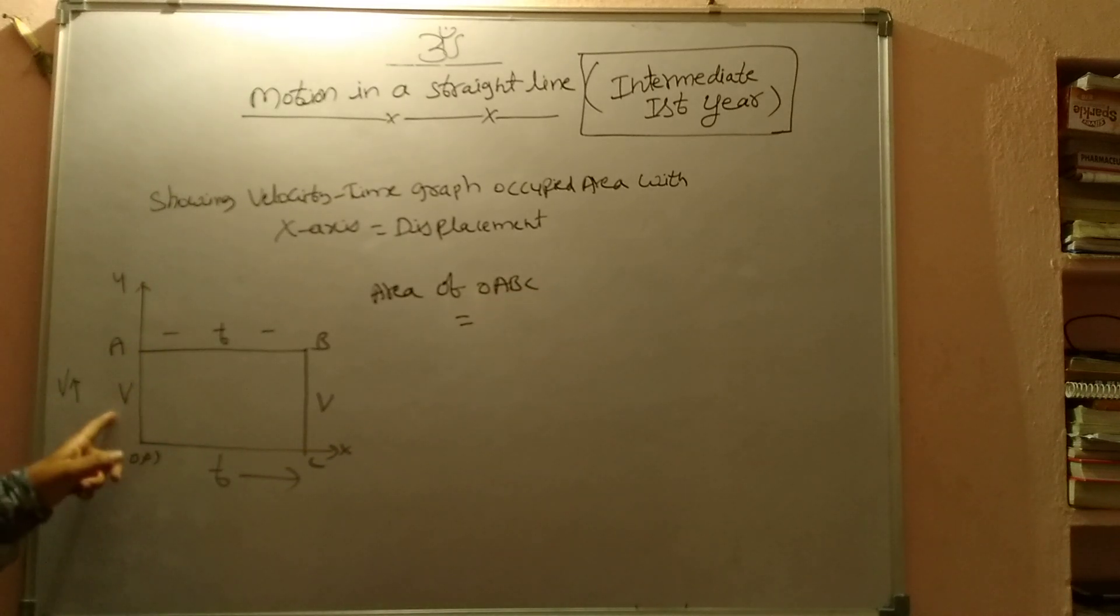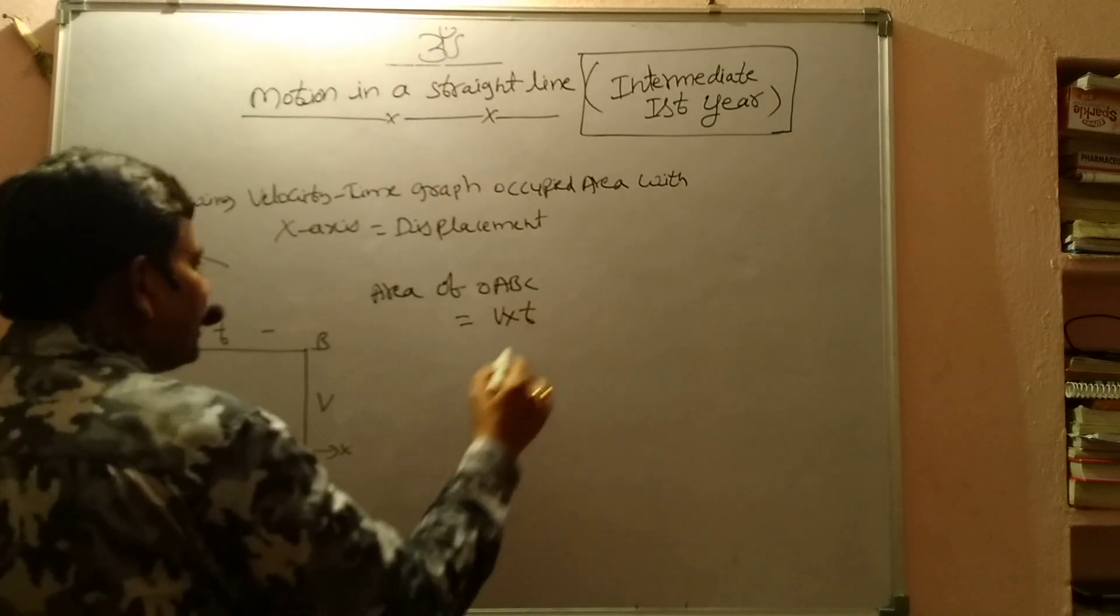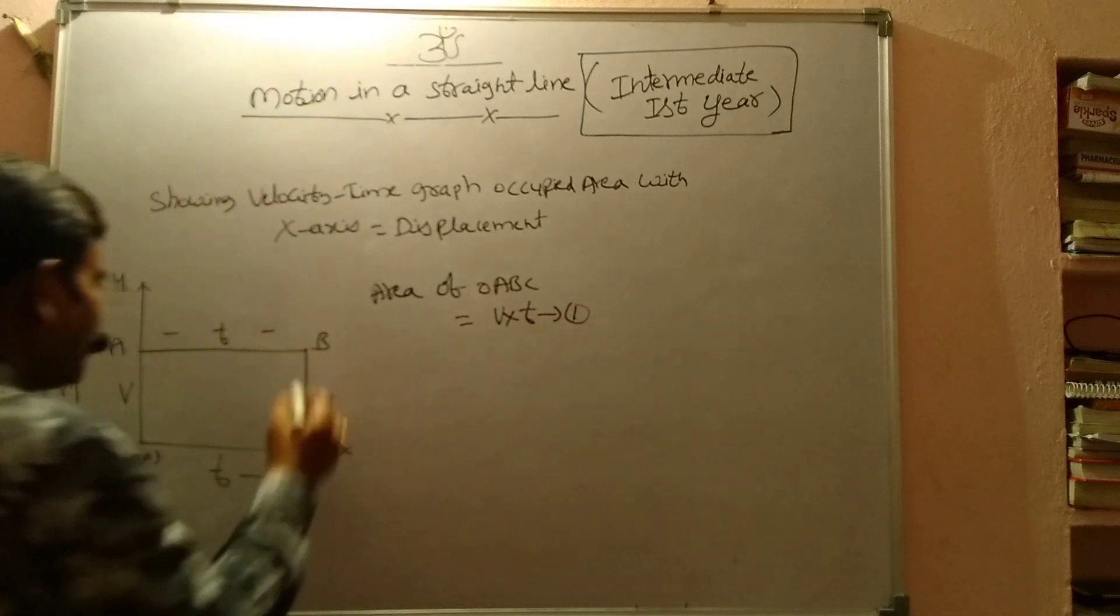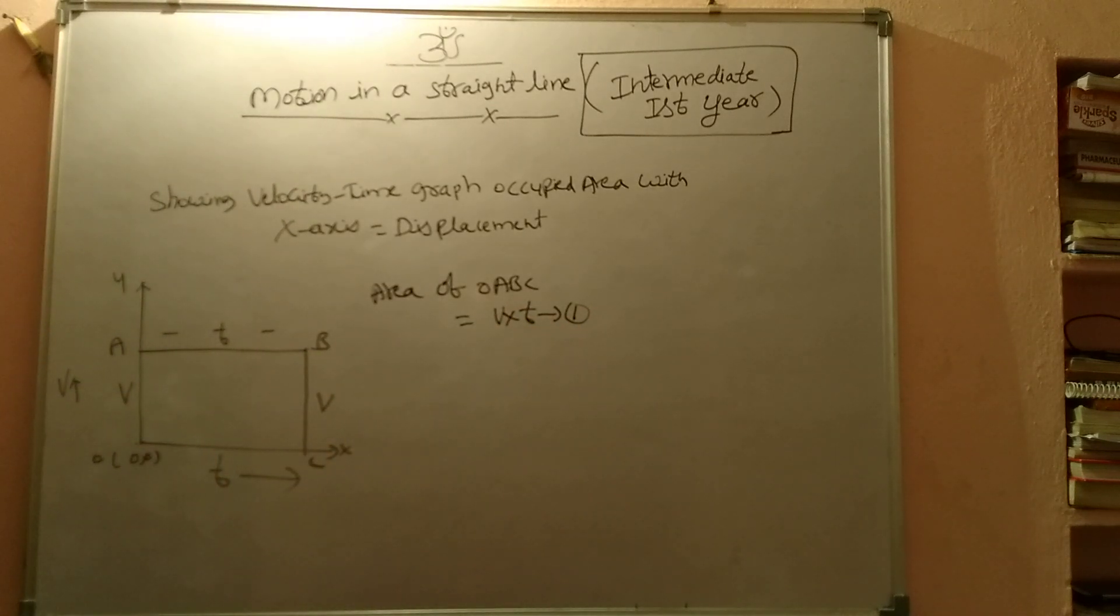So what are we taking? If this is V, because it's uniform velocity, and if this is the time duration, then V into T gives the velocity time curve occupied area with x-axis.